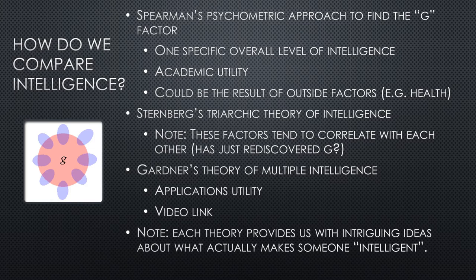Essentially, Spearman wanted to know: if you were high on one test, would you be high on the second, third, and fourth? Would you have an essentially consistent performance, even if the tests were theoretically getting at different things? And what Spearman found was that even though there were some subtle differences in performances from test to test, most of us seem to have an underlying factor that pulled our performance into a certain range. We call this underlying factor the G factor — general intelligence.